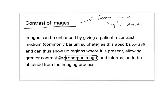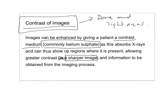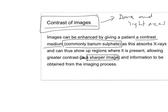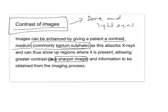We're going to talk about sharpness and contrast separately. Contrast can be improved by giving patients a contrast medium, something to drink — commonly barium sulfate. Barium sulfate is absorbed by the bones, so as the x-ray is taken, the x-rays are absorbed by a greater amount. It shows up regions where it is present, and this causes greater contrast.